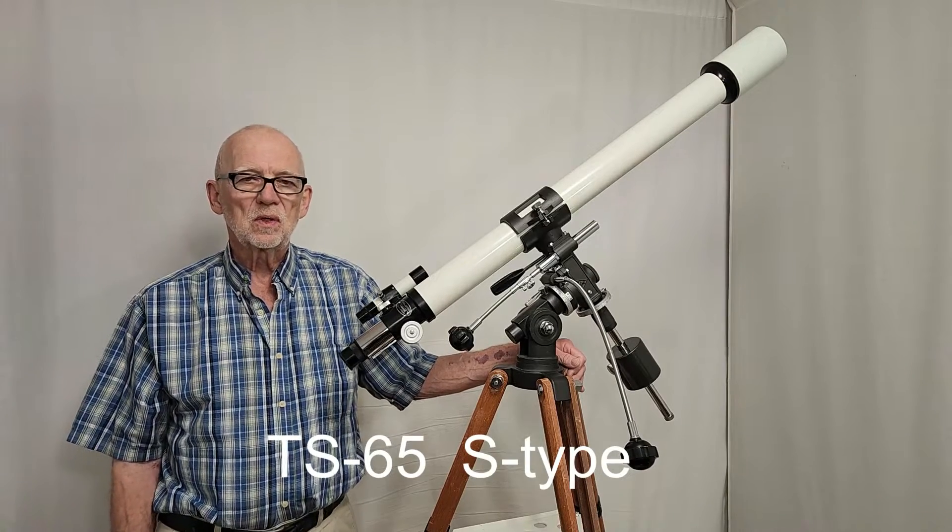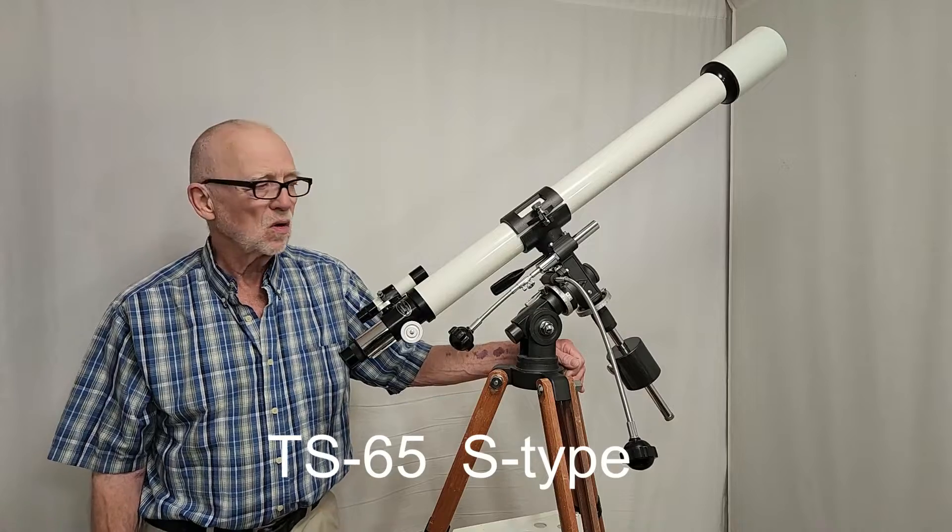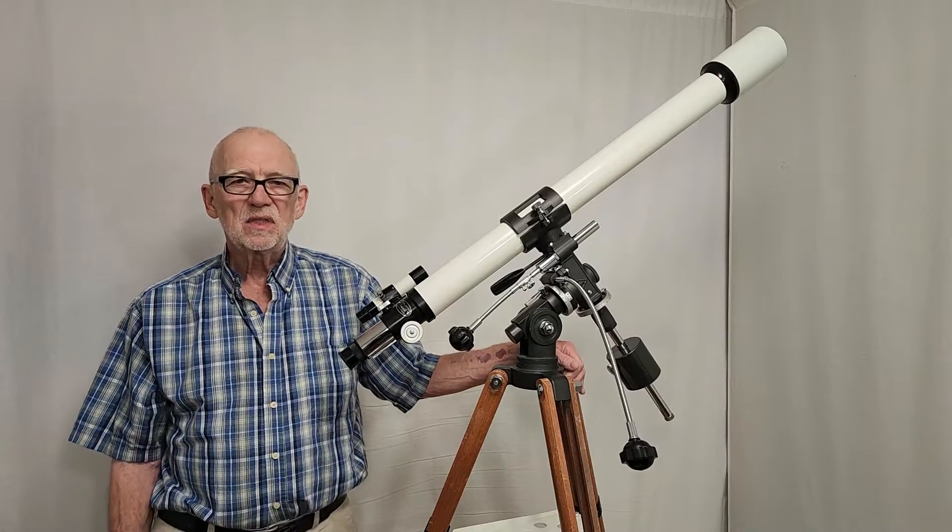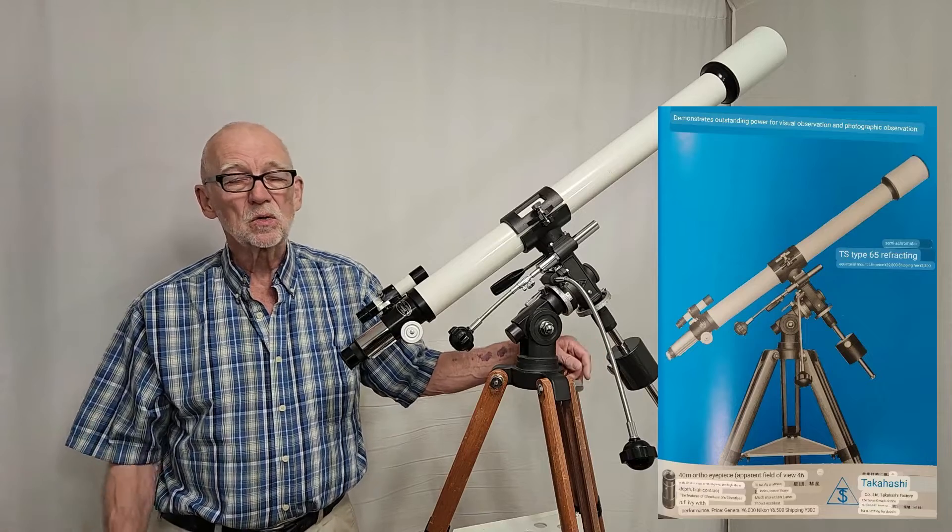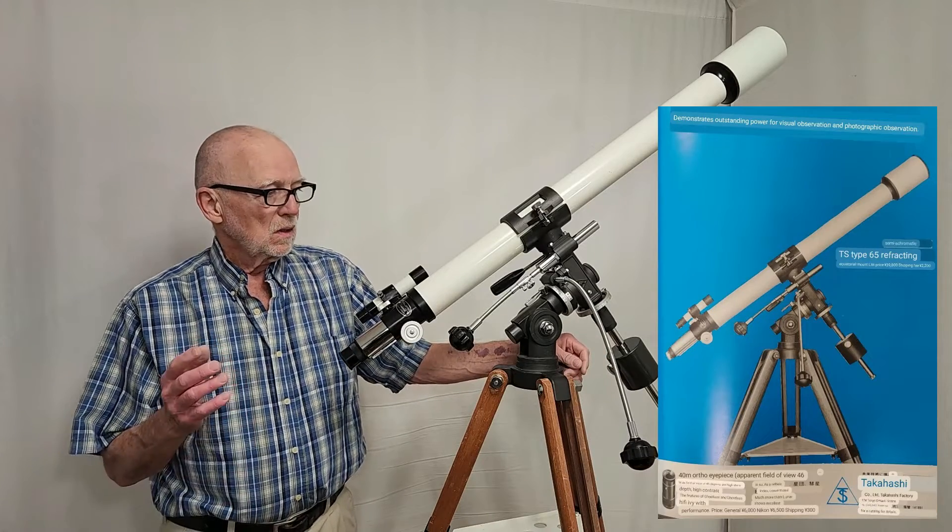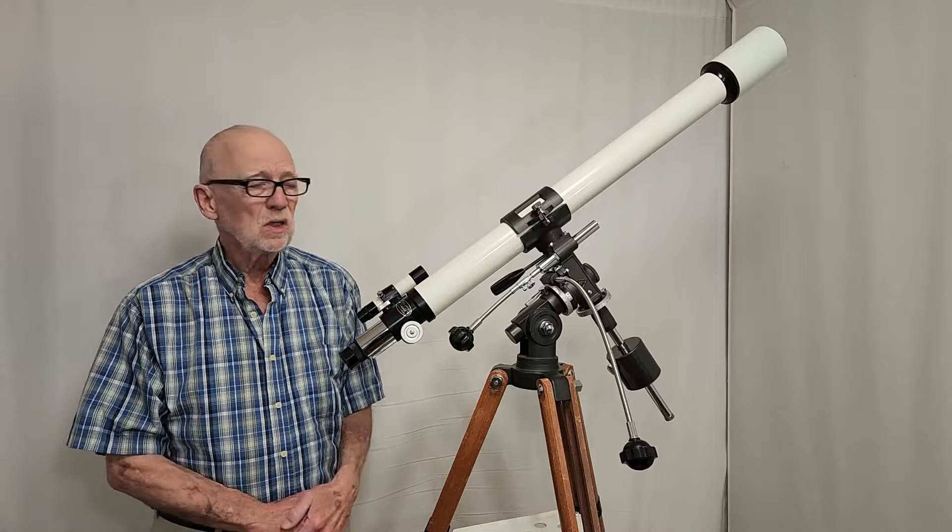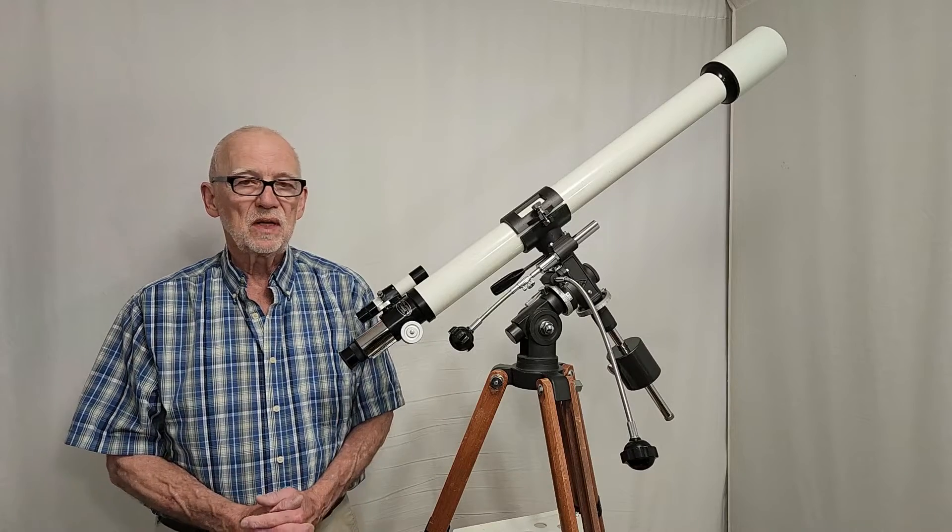It was first released in 1971 or so, about a year after the TS-65D type, which it is very closely related to. This scope is a sort of lighter weight version of the TS-65D.